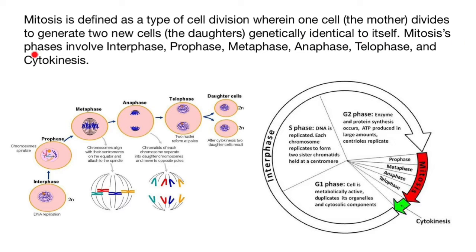Mitosis phases involve interphase, prophase, metaphase, anaphase, telophase, and cytokinesis. And here are two pictures showing how the cycle is usually represented in your textbooks.